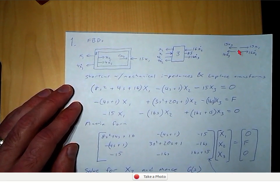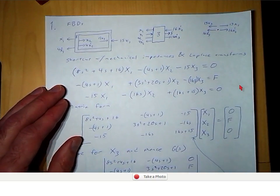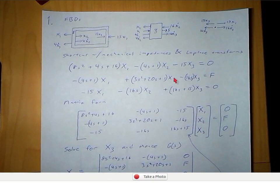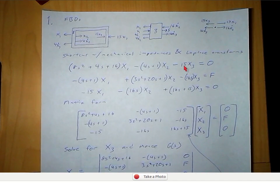And then do the same thing for the mass with x2, and then the motion at x3. The only difference with x2 is we have the applied force F. I just went through and used the shortcut for mechanical impedances, which is in section 2.5 of the book. We have the mechanical impedances associated with the motion at x1 times the Laplace transform of the motion x1, minus the impedances between x1 and x2 times Laplace of x2, minus the impedances between x1 and x3 times x3. That is equal to the sum of the applied forces at x1, which is zero.